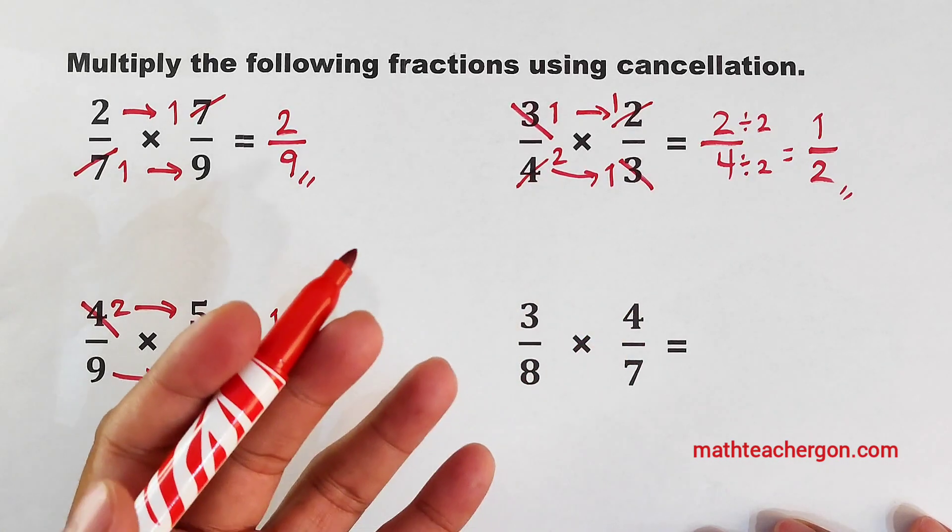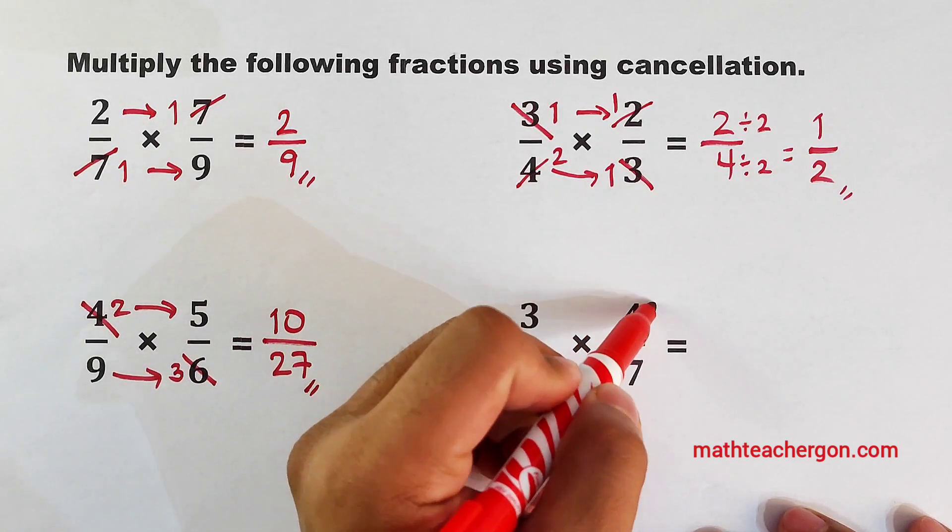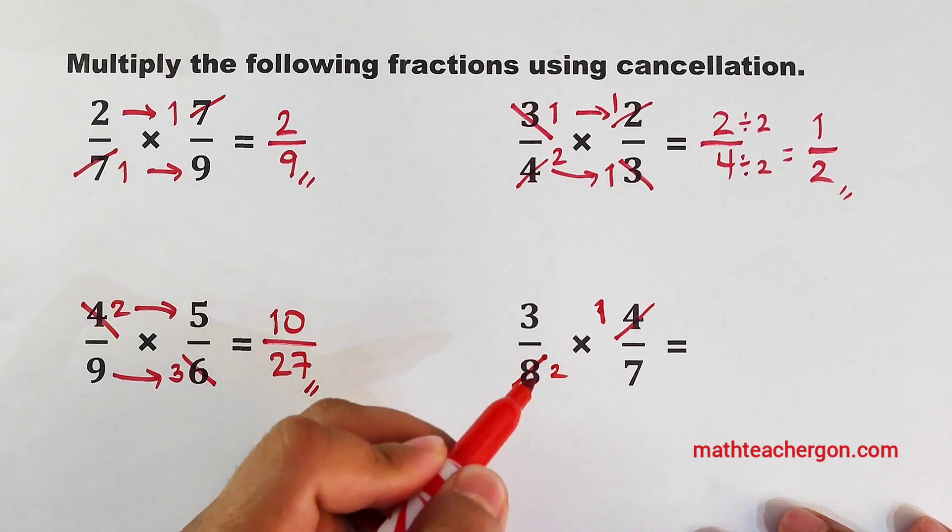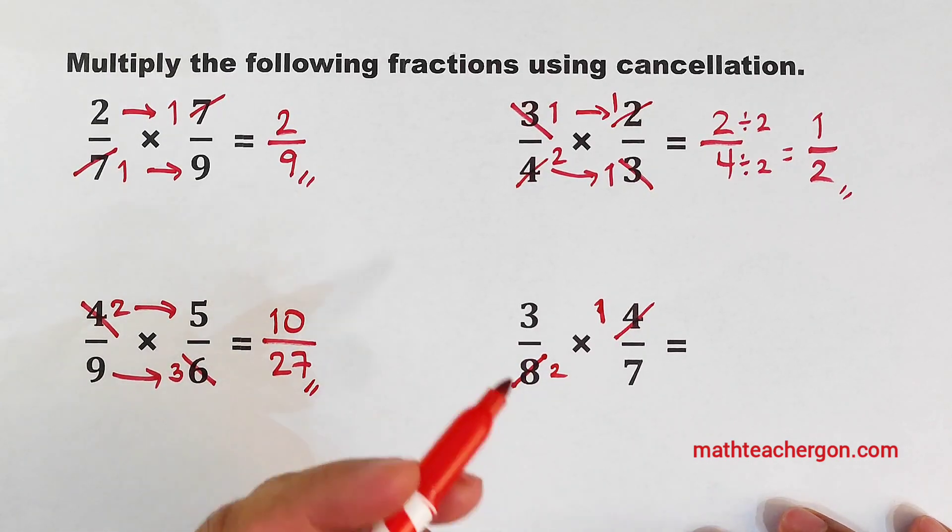Here, the greatest common factor is 4. Cancel 4, it will become 1. Cancel 8, it will become 2, because there are 2 4's in 8.